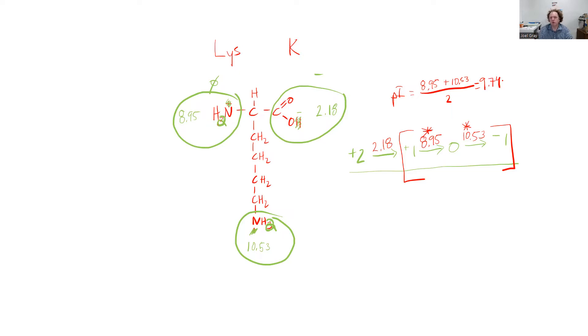That's all that you need to do to calculate the pI of an amino acid. Figure out where your molecule transitions, at what pKa values your molecule transitions from a +1 to 0 and a 0 to a -1.